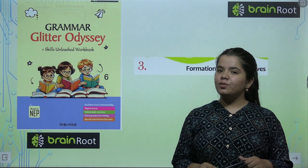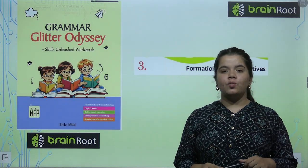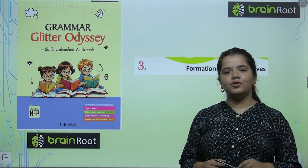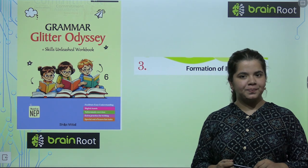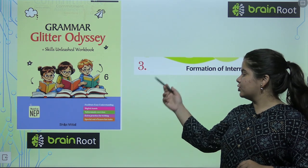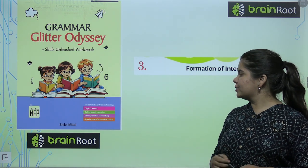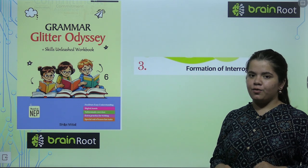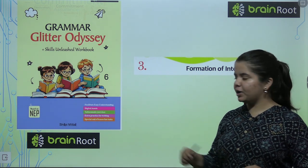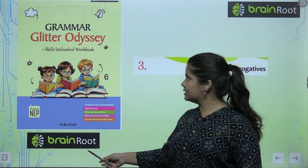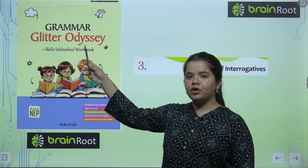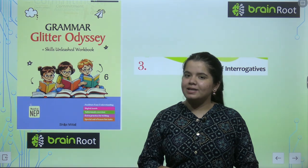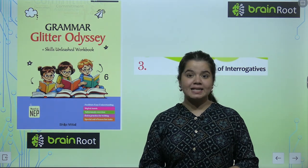Hi kids, how are you all? Welcome to another video of your book. Today we are going to start with a new chapter, that is chapter 3. We are studying the Brain Root series and the name of your book is Grammar Glitter Odyssey of class 6.